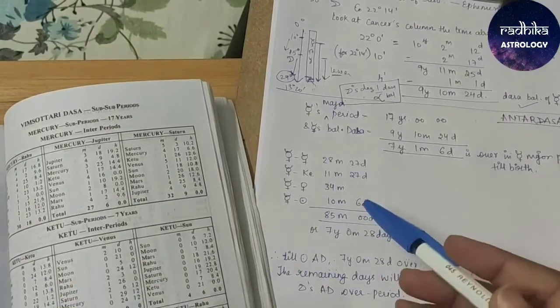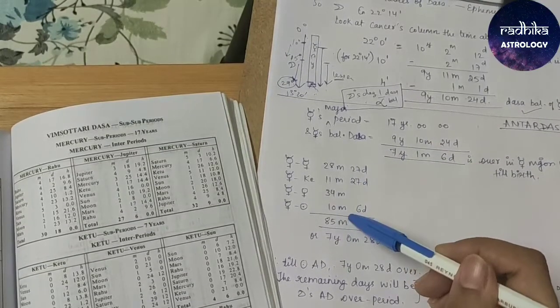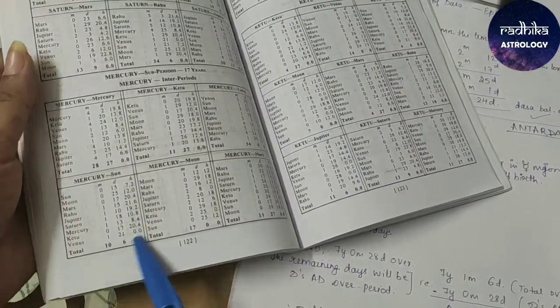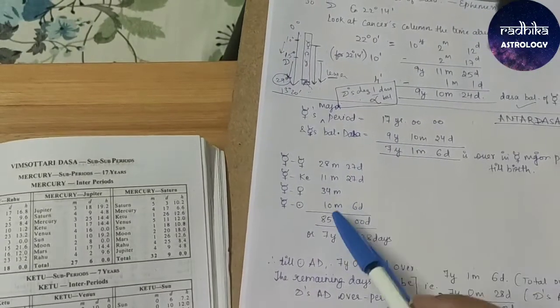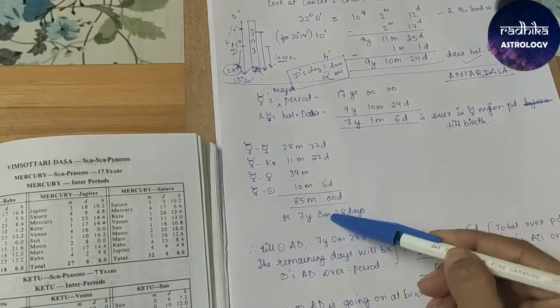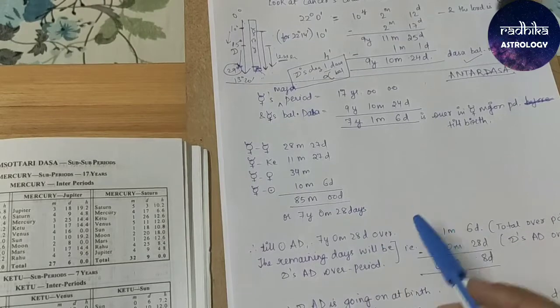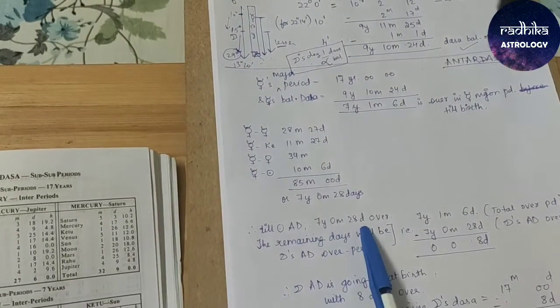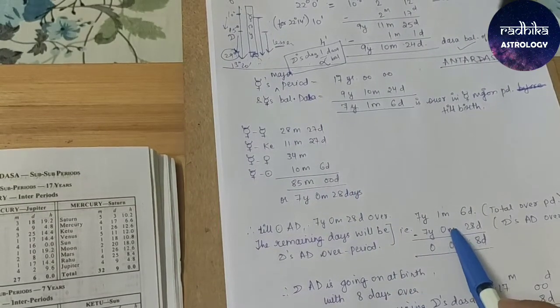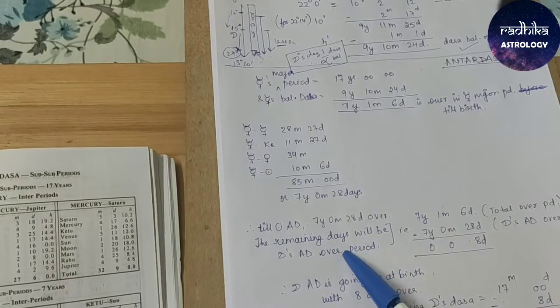According to my general understanding or common sense, I have to arrive around this period because this is the over period. I have to find which all lords are over, which is the current lord. I got this value after adding all the values till Sun. Mercury has given Sun 10 months, 6 days. I added all of the values and I got 85 months, 0 days. I converted into year, months and days: 7 years, 0 months, 28 days. Matching these two values, the exact time period over and the time period still left to be covered. That means till Sun Antardasha, 7 years, 0 months, 28 days were over.